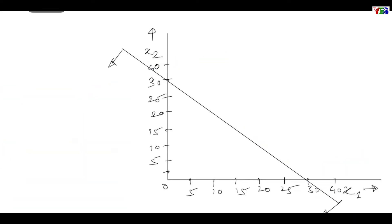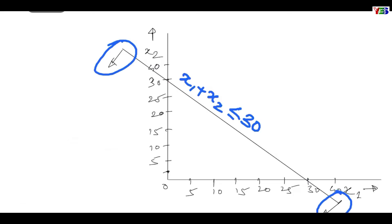The arrow sign represents that x1 plus x2 is under less than 30. Hence this is our line for x1 plus x2 less than or equal to 30. Now let us move to the next constraint.